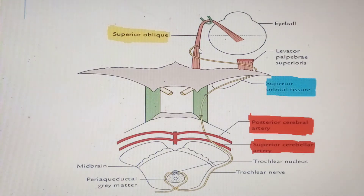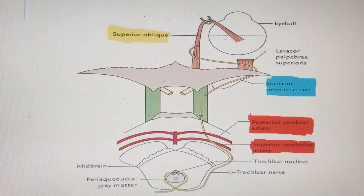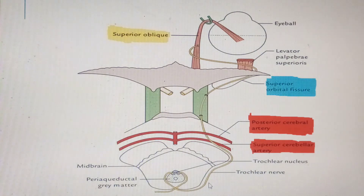To summarize the key unique features of the trochlear nerve: first, it has the longest intracranial course because it winds around the midbrain and exits dorsally. Second, there is complete decussation of its fibers before it exits the midbrain. Third, it is the thinnest — the slendermost — cranial nerve in the human body.